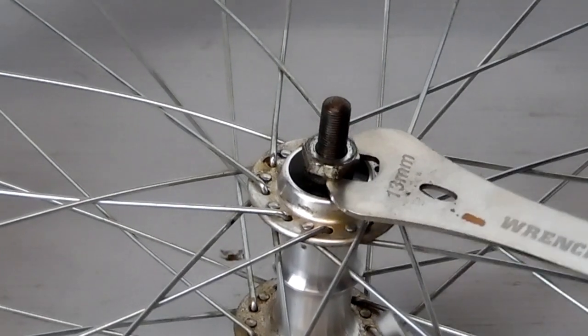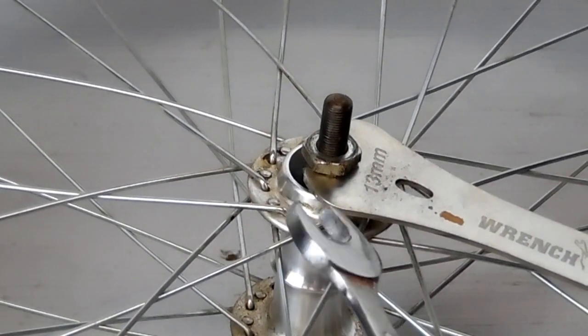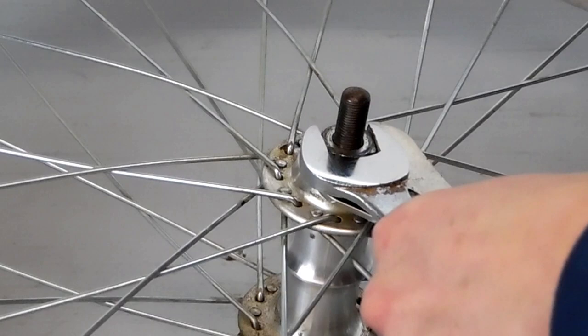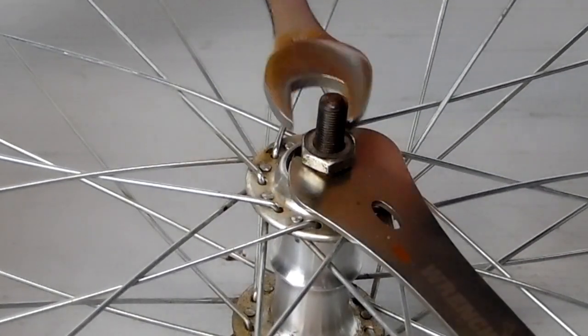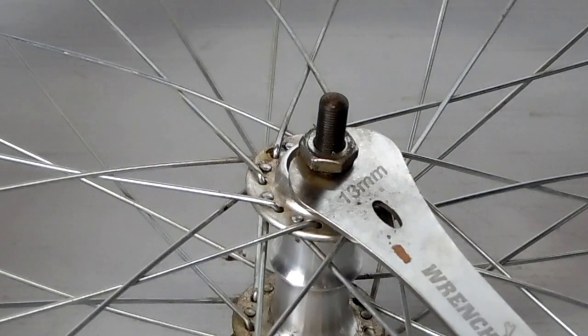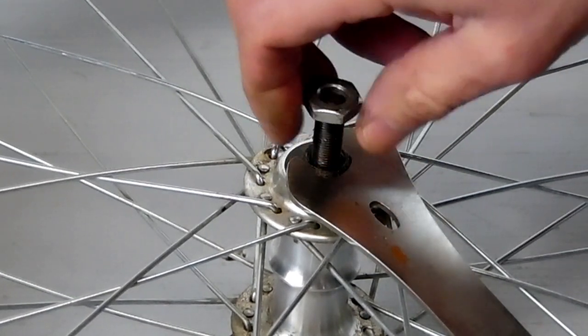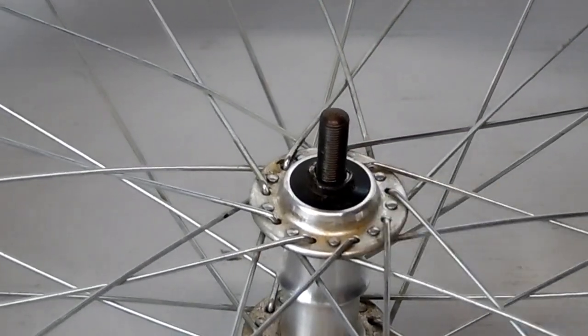We'll need a cone wrench, 13 millimeter for this one, for our cone nut, and then a regular wrench, 15 or 17 usually. And then we'll loosen that and then remove that jam nut.